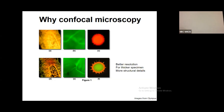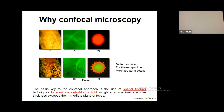Confocal microscopy can definitely provide more structural details. How does confocal do it? It basically uses certain restrictions or spatial filters to reject out-of-focus light. If you have all the light coming together to the detector, images will be more illuminated but you will lose resolution because of less contrast. We can improve contrast by rejecting out-of-focus light - that is the basis of confocal microscopy.